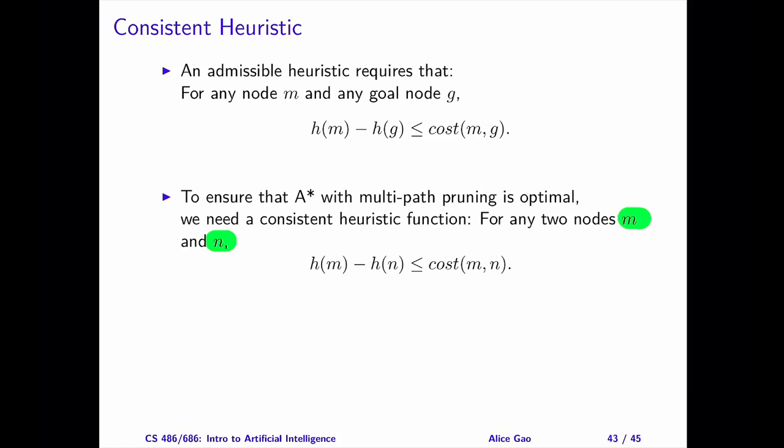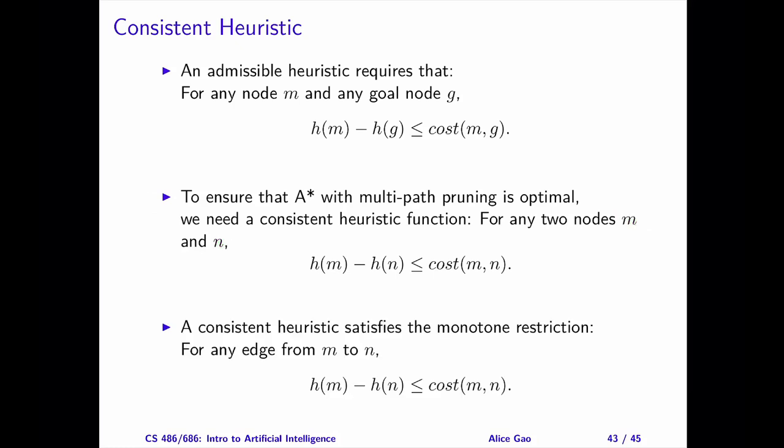In practice, it is challenging to verify the definition of a consistent heuristic function directly, since we need to check every pair of nodes in the search graph. Fortunately, every consistent heuristic satisfies the monotone restriction, which is a simpler condition and easier to verify. The monotone restriction requires that, for any directed edge from M to N, the same inequality must be satisfied. This is simpler since we do not need to consider every pair of nodes — only pairs directly connected by an edge. Finally, if the heuristic is consistent, then A-star search with multipath pruning is optimal. The Poole and McWorth book provides a proof of this — check it out if you are interested.